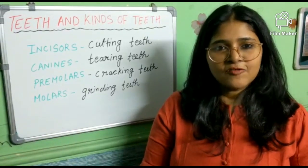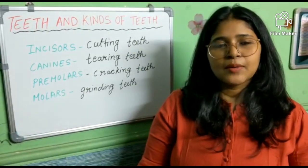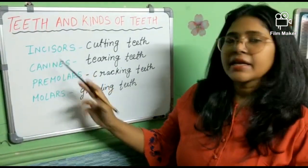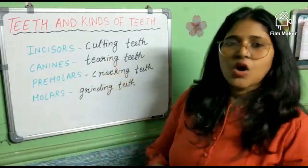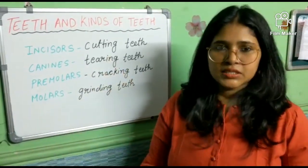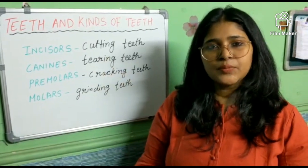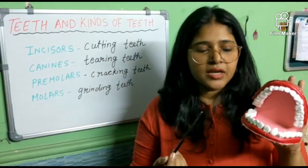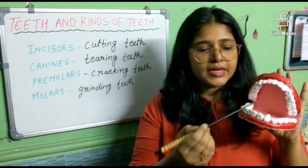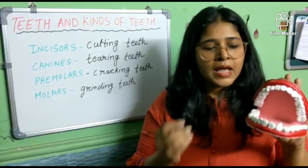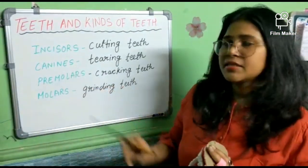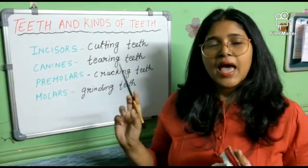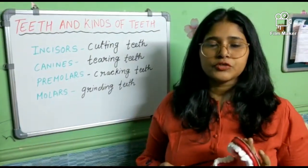After knowing the kinds of teeth, let us discuss their functions. The first teeth — incisors — are also known as the cutting teeth. They are present in the front, so whenever we eat anything, the first bite helps you to cut your food. Next are canines, also known as tearing teeth. Canine teeth help you to tear your food into smaller pieces.